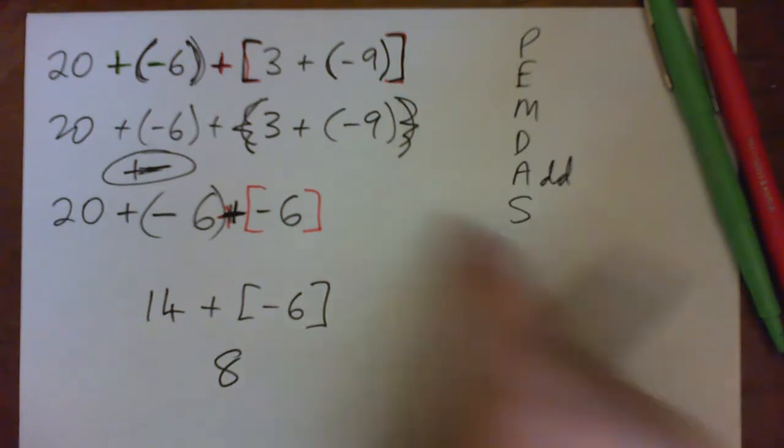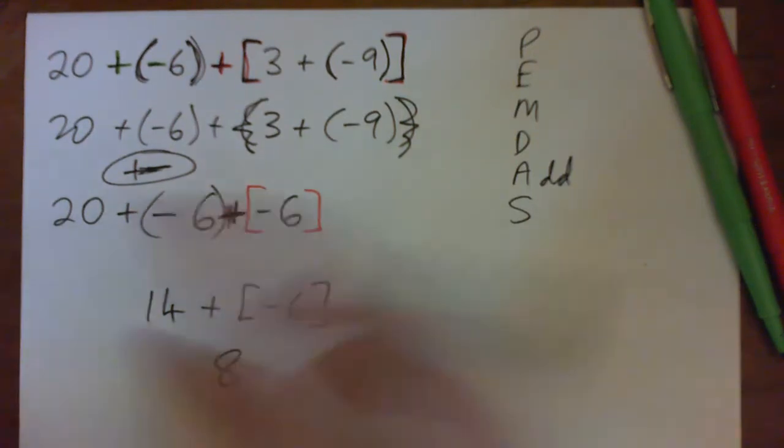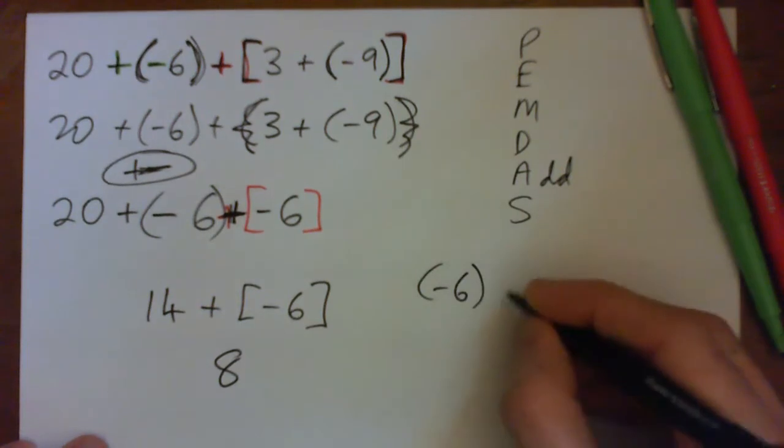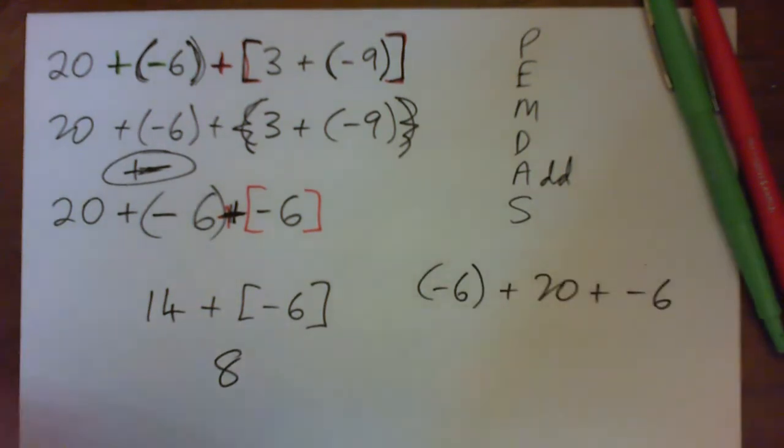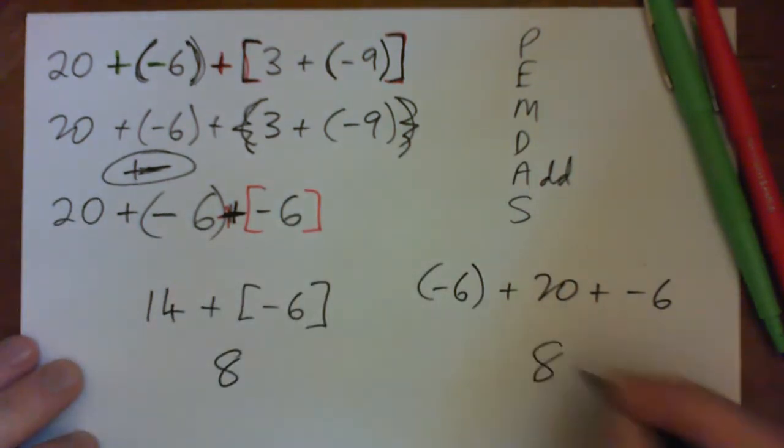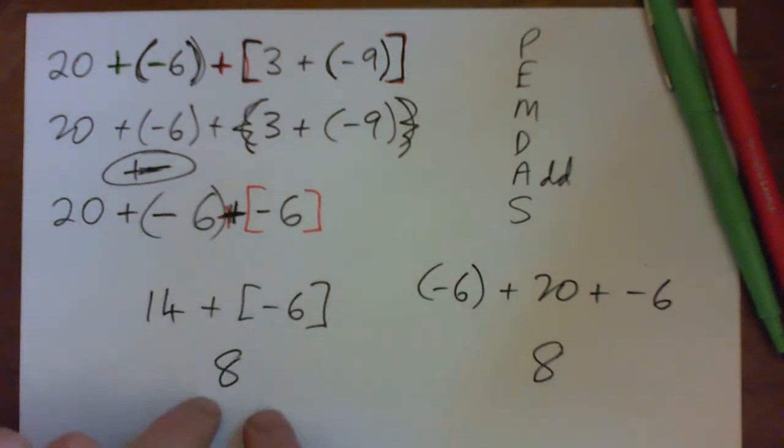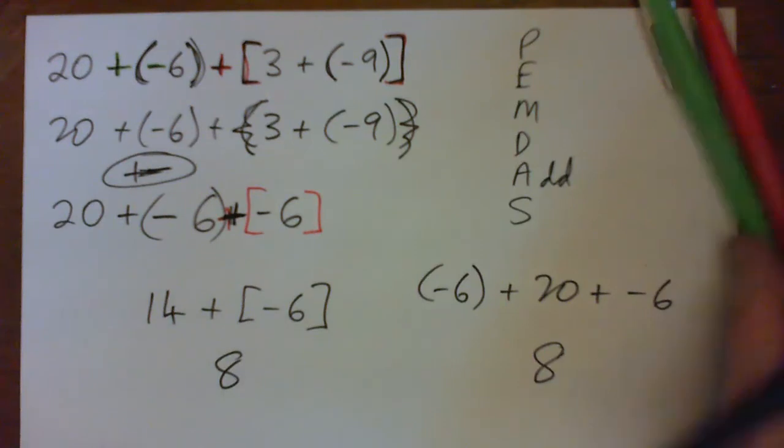And going back to this line, we could have combined them. We could write it like negative 6 plus 20 plus negative 6. You can interchange. It's just 6 bad guys, 6 bad guys, 20 good guys, and that overall makes 8 good guys. So you don't have to do it in this exact way either. But 8 is the final answer there.